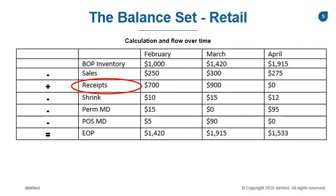We close February at $1,420 end-of-period inventory. February EOP becomes our BOP for March for the same $1,420. Now we subtract our sales, add back in the receipts, subtract shrink and markdowns in March for our end-of-period inventory. This then becomes April's beginning of period inventory, and so on as we go through the months and the year, noting the movement of our inventory over time.